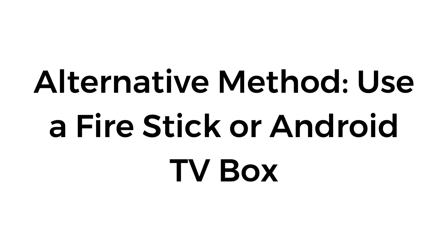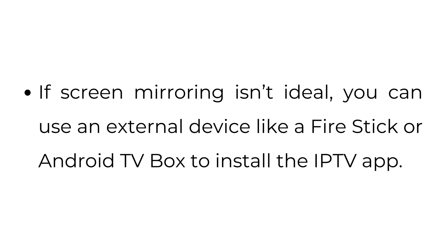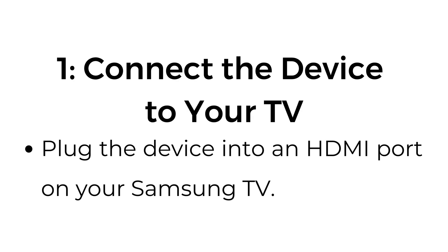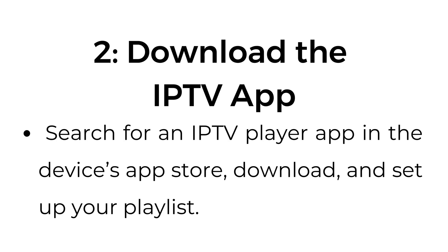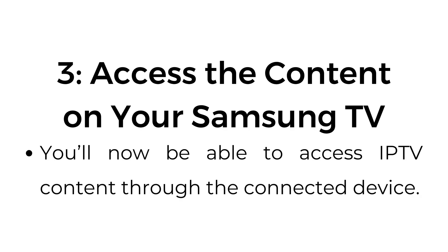Alternative method: use a Fire Stick or Android TV box. If screen mirroring isn't ideal, you can use an external device like a Fire Stick or Android TV box to install the IPTV app. Plug the device into an HDMI port on your Samsung TV. Search for an IPTV player app in the device's app store, download it, and set up your playlist. You'll now be ready to access IPTV content through the connected device.